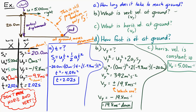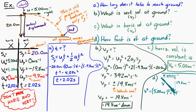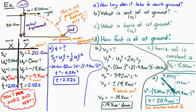To find how fast it's moving when it reaches the ground, it has a horizontal component of 5 meters per second and a vertical component of 19.8 meters per second downward. I combine those two components using the Pythagorean theorem to get the total velocity. When it reaches the ground, it's moving at 20.4 meters per second. The problem only asked how fast, not the direction, so no direction is needed.